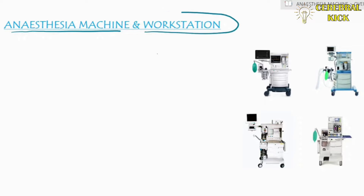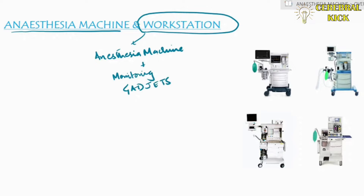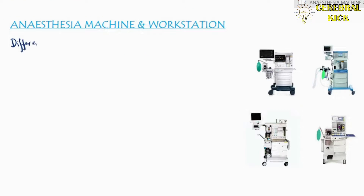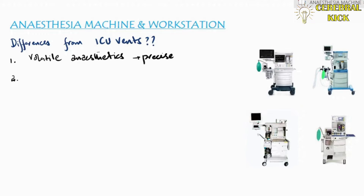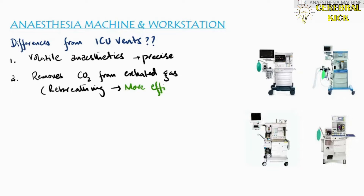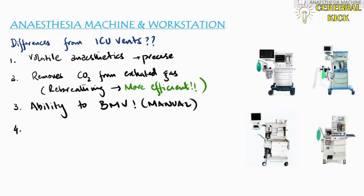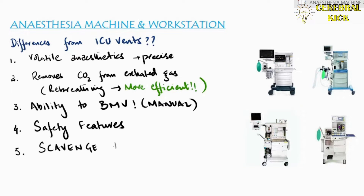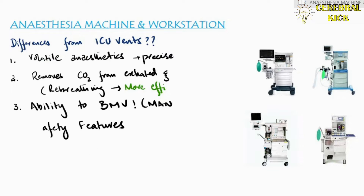When you combine anesthesia machine with monitoring gadgets it's called the anesthesia workstation. Anesthesia vents are almost the same practically as the ICU vents, so what's the difference? Well, there is a lot. Firstly, the volatile anesthetics are given in a very precise manner. Secondly, it removes carbon dioxide from the exhaled gas, so re-breathing and more efficiency. Thirdly, it has the ability to provide bag mask ventilation. There are plenty of other safety features we will discuss in subsequent episodes, and of course the ability to scavenge the used gas.